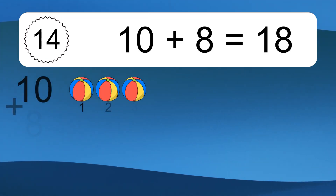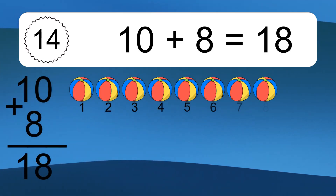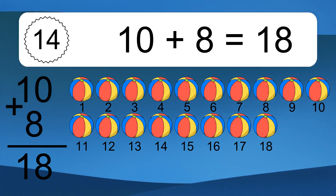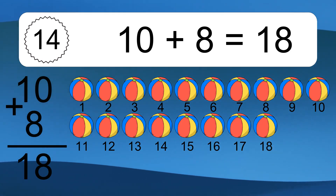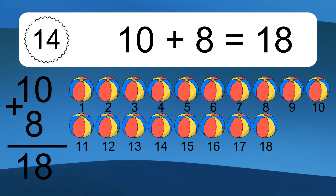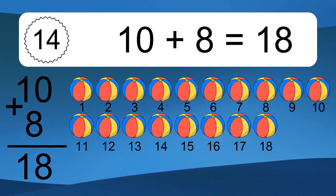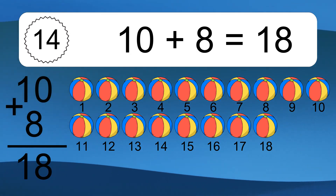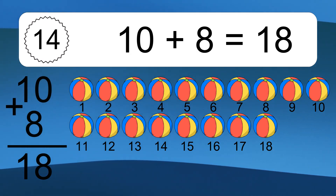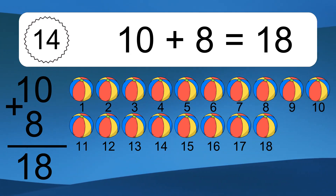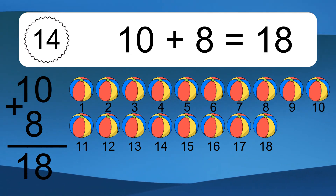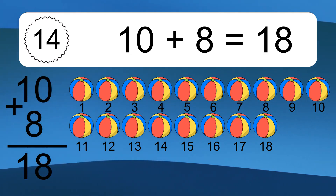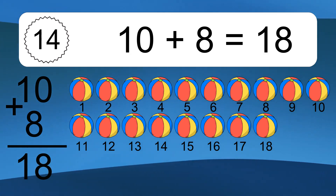10 plus 8 equals 18. Let's count it: 1, 2, 3, 4, 5, 6, 7, 8, 9, 10, 11, 12, 13, 14, 15, 16, 17, 18.